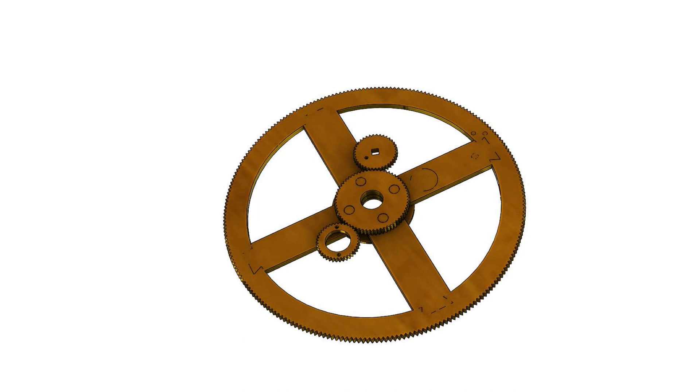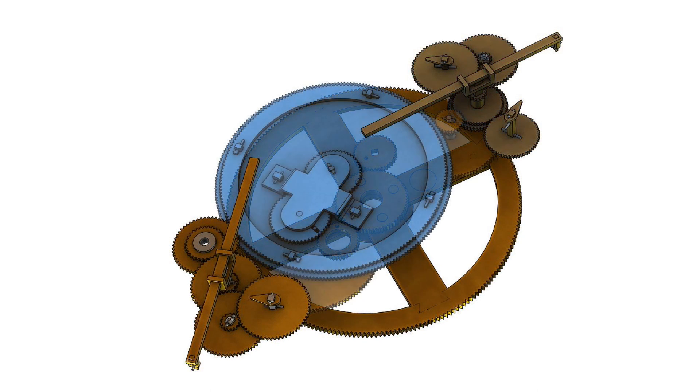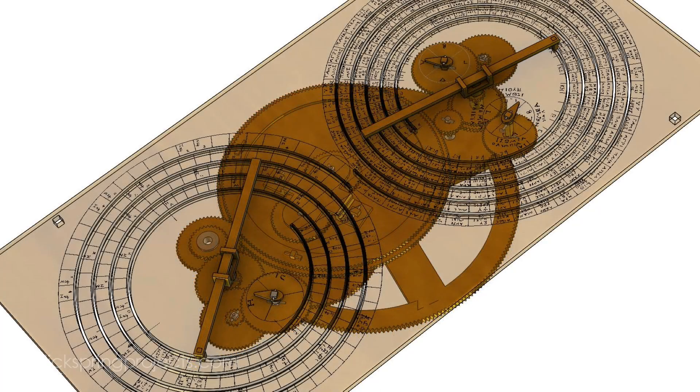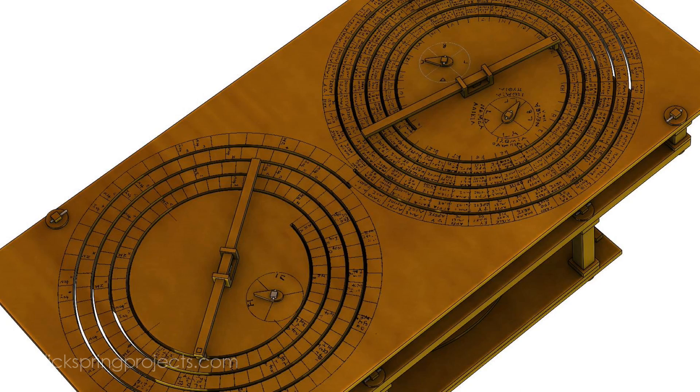It engages two wheels that in turn drive the gearing that animates the eclipse prediction display, the calendar display, and the lunar phase display on the front dial. Now that's a lot of gears, generating a lot of friction. So the load on B2 and its rivets is considerable, and the maker has addressed this issue in the design of the component.